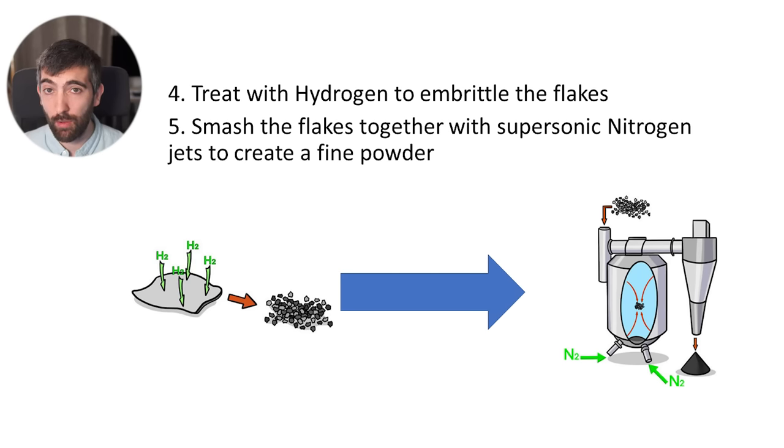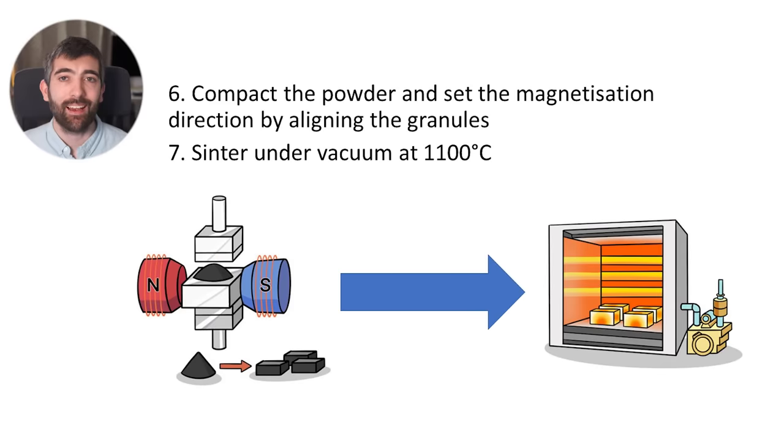Then we blast those flakes together with supersonic jets of nitrogen gas in a jet milling machine to turn those flakes into a super fine neodymium magnet powder. Then we take our neodymium magnet powder and we compact it in a hydraulic press under the influence of a magnetic field and that magnetic field aligns all the little granules of powder in the same direction and that's going to be the preferred magnetization direction for our magnet at the end.